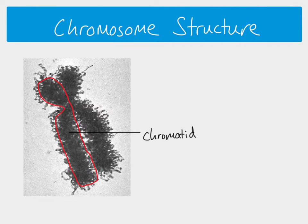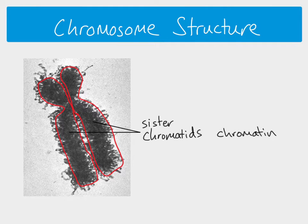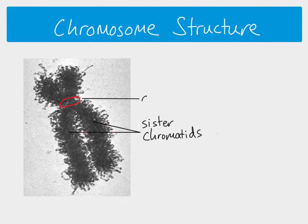What we can see is this structure here, which is a chromatid - this is one DNA molecule, and that DNA molecule is coiled and coiled many times. It's made of something called chromatin, so the DNA is there along with proteins, and together the DNA and proteins are called chromatin. This chromatid has a sister, so what we've got here is a chromosome made of two sister chromatids joined by a structure called a centromere.